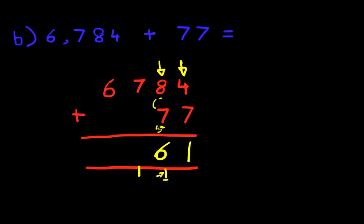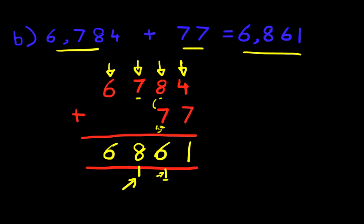We've added the units, we've added the tens, and now we're going to add the hundreds column. We have 7, don't forget the 1 here. So 7 plus 1 is 8. And lastly, we've got the thousands column, which is simply just the number 6. We're not adding that to anything else. And we have our answer. It is 6,861. That is correct.